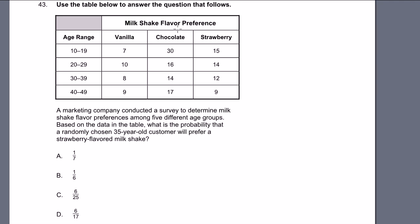Problem 43. Use the table below to answer the question. A marketing company conducted a survey to determine milkshake flavor preferences among five different age groups. Based on the data in the table, what is the probability that a randomly chosen 35-year-old customer will prefer a strawberry flavored milkshake? So a randomly chosen 35-year-old, that puts us in this bucket right here, 30 to 39-year-olds.